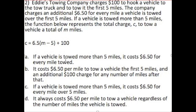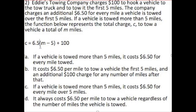Let's read through the answer choices. Choice A: if a vehicle is towed more than 5 miles, it costs $6.50 for every mile towed. We know that we have the number of miles minus 5, so the total miles minus 5 times $6.50 plus the $100 initial fee. It costs $6.50 per mile, but only for every mile over the first 5 miles — so that doesn't work.